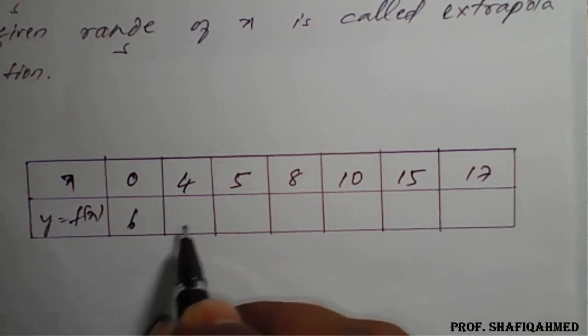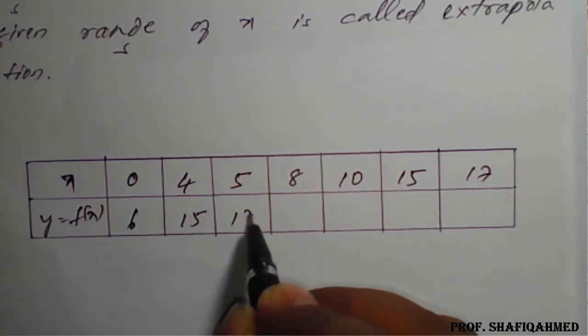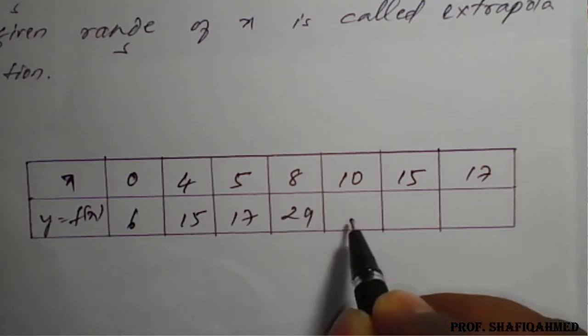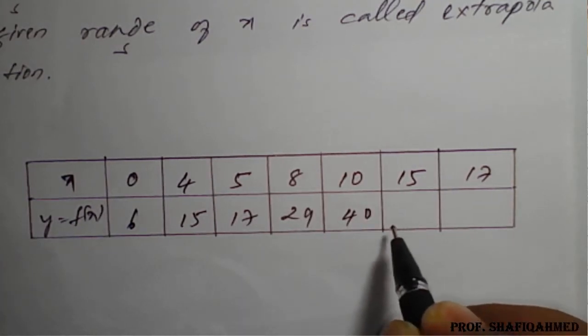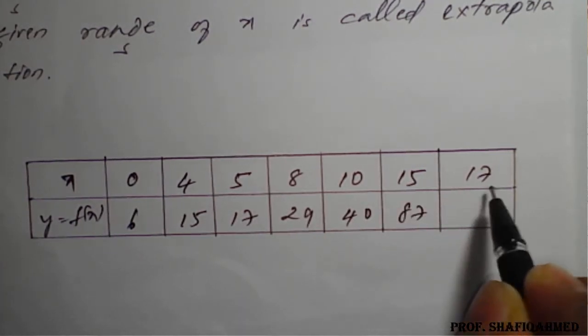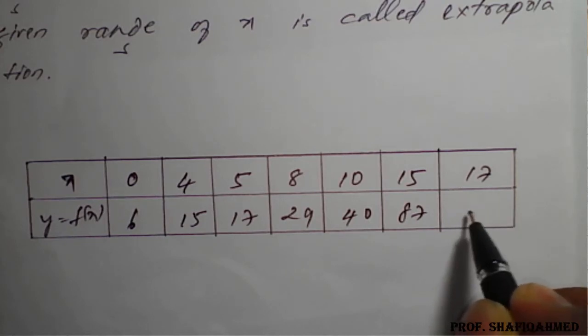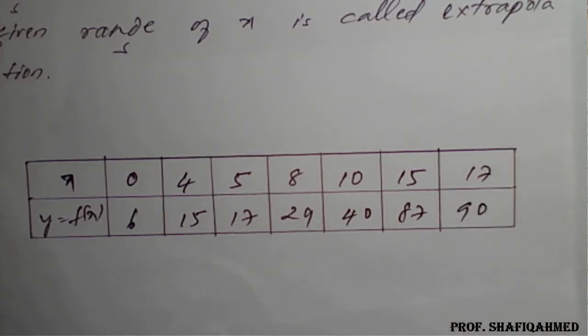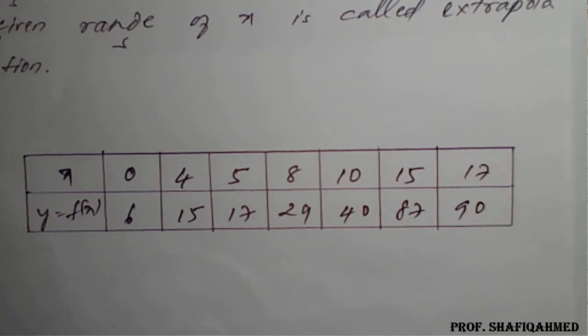And similarly, y or f of x values are 6, 15, 17, 29, 40, 87 and 90 here. These are the respective values.